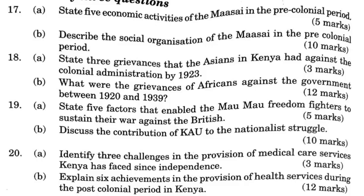Question 18a: State three grievances that Asians in Kenya had against the colonial administration by 1923. One, inadequate political representation. Two, exclusion from the White Highlands. Three, discrimination in the provision of social services.